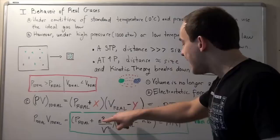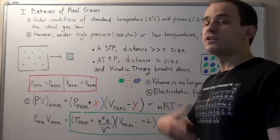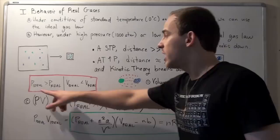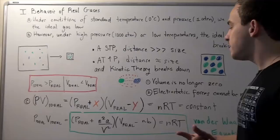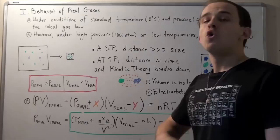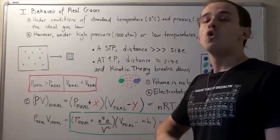From experiments, scientists found that X equals n²a/V² and Y equals nb, where n is the number of moles and V is volume. A and B are constants that depend on the gas being used, so they're different for different gases. We add X to P_real because P_real is smaller than P_ideal, and we subtract Y from V_real because in V_real we are accounting for the volume of the actual molecules, while in V_ideal we are not. This formula is known as the Van der Waals equation.